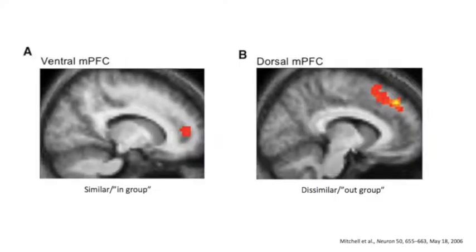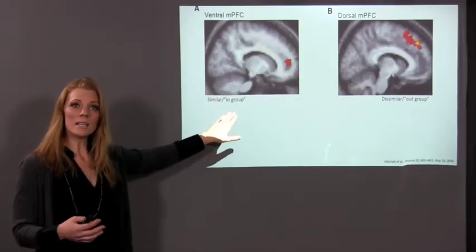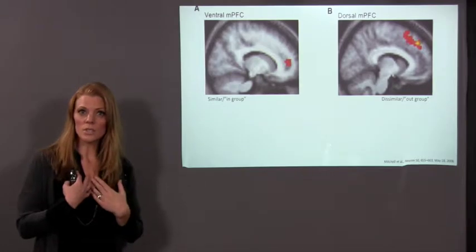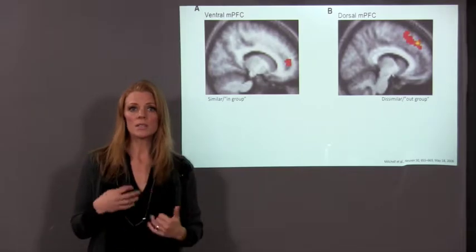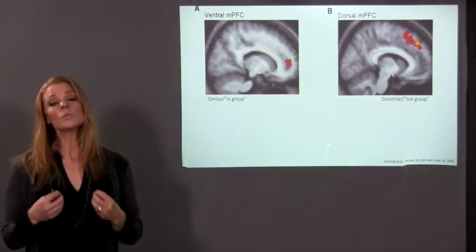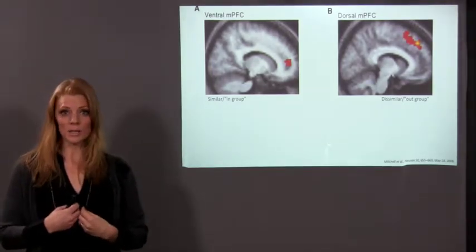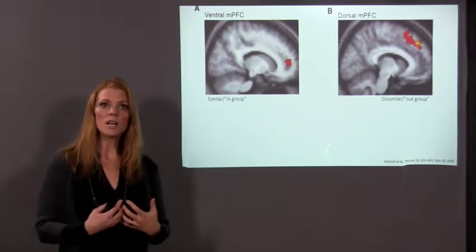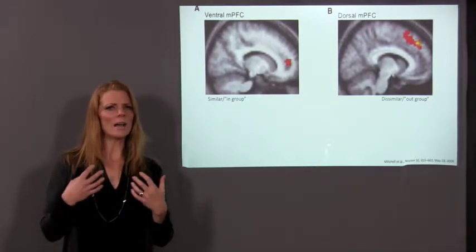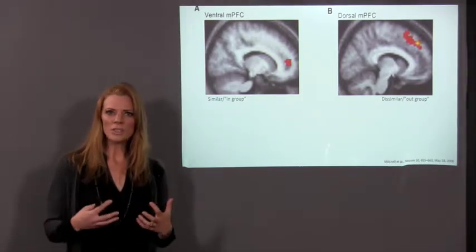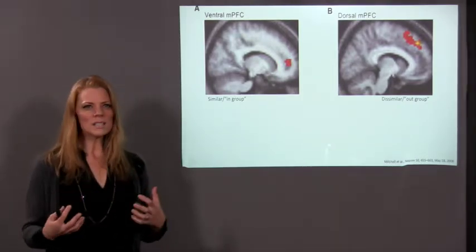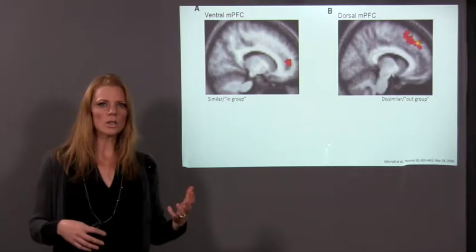A large body of work now demonstrates that when we process information about a group of people that we perceive as similar — an in-group, similar to ourselves — we use parts of our brain, the ventral medial aspects of our prefrontal cortex and other regions, that we use when we make decisions about ourselves. When we make decisions about ourselves, we approach them with a lot of understanding, empathy, compassion, and awareness of history, future, and long-term effects.